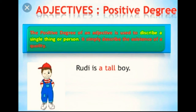We can tell about it — how it is. For example: Rudy is a tall boy. Rudy is a young boy. Positive degree describes a single person or thing normally.